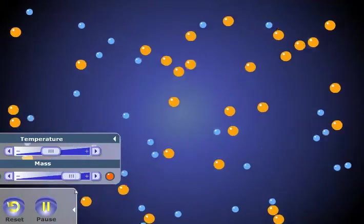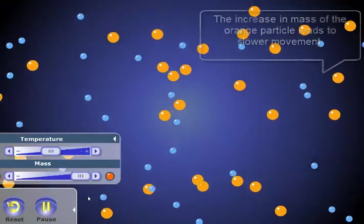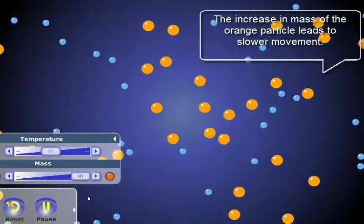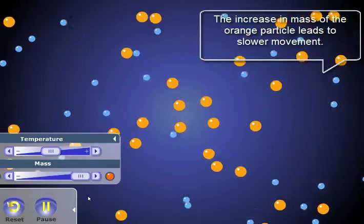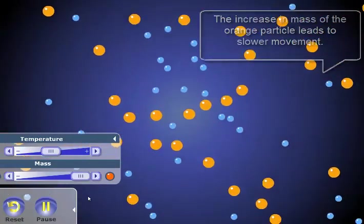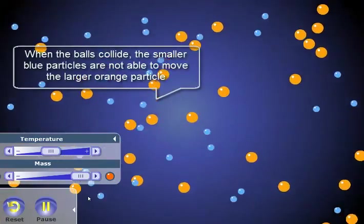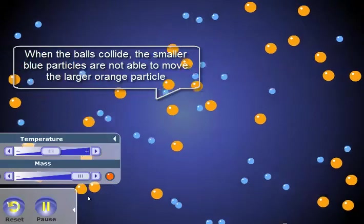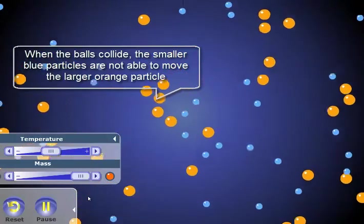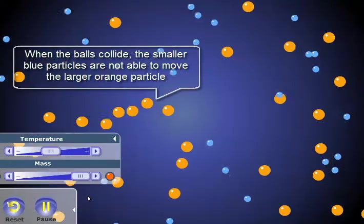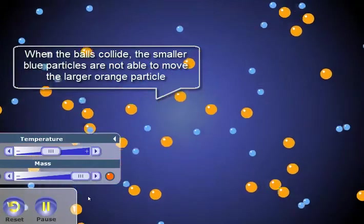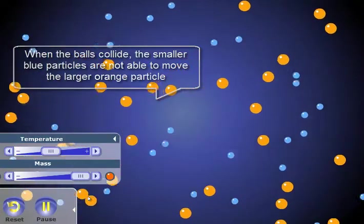If I increase the mass of the orange ball, notice how much slower it is moving in relation to the blue balls. That's because the greater mass of the object is going to need more collisions with more blue balls in order for it to move around.